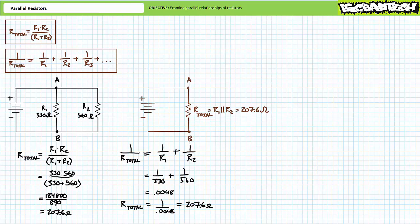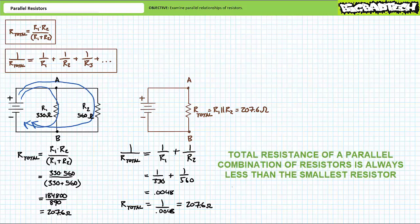Let's use the other formula to check this result. 1 over 330 plus 1 over 560 is roughly 0.0048. To obtain the final answer we need to invert this value: 1 over 0.0048 is roughly 207.6 ohms, as previously. Note that the total resistance of this parallel combination is less than the smallest resistor constituting this relationship — which makes sense, since the source has a choice of two paths. This is a great way of checking your work: the total resistance of a parallel combination is always less than the smallest resistor. If your answers suggest otherwise, you are doing it wrong.